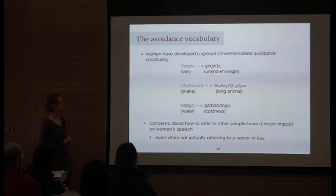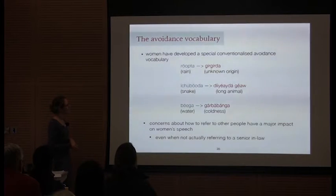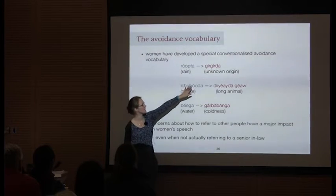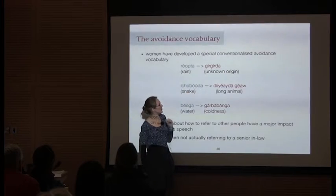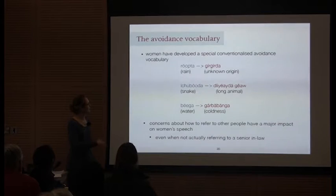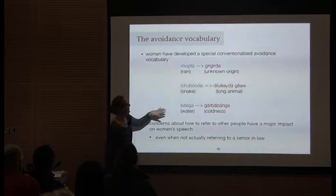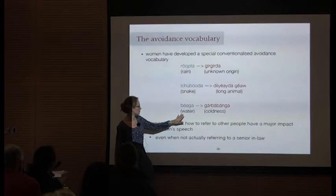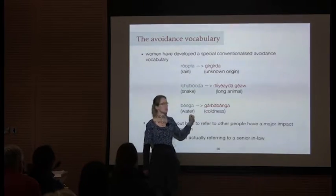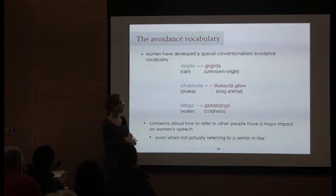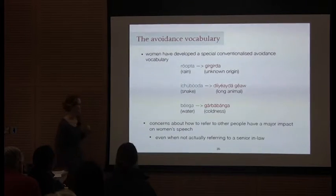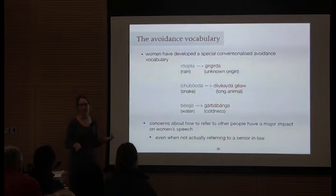What do women do in the face of all these taboos? Over time, women have developed a special conventionalized avoidance vocabulary with alternative words for anything they might need to avoid. For example, if you can't say 'rain,' you can use an avoidance equivalent, and everyone will know that's an avoidance word meaning rain. Often there's a transparent relationship between the avoidance term and its ordinary counterpart — if you can't say 'snake,' you say 'long animal'; if you avoid the word for water, you can use a term meaning something like 'coldness,' derived from the adjective 'cold.' Usually there are multiple avoidance equivalents for a single word, because the avoidance term itself might also sound like a name. Concerns about how to refer to other people have a massive impact on women's speech, even when they're not actually referring to a senior in-law.